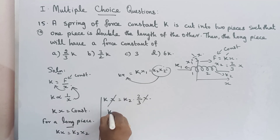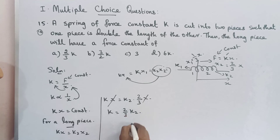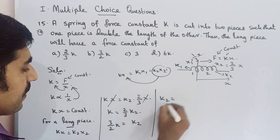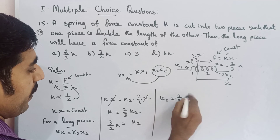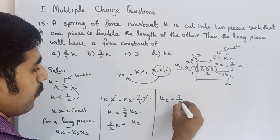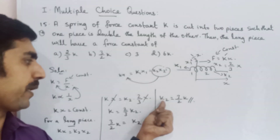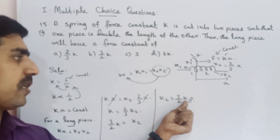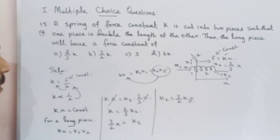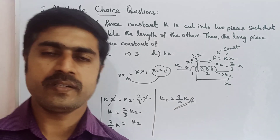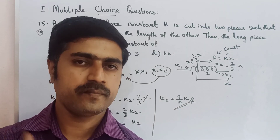From this, K2 is equal to 2/3 K. So the spring constant of the longer piece relative to the initial spring constant is 2/3 K. This is the answer. It's very simple. Share and practice. All the best. Thank you.